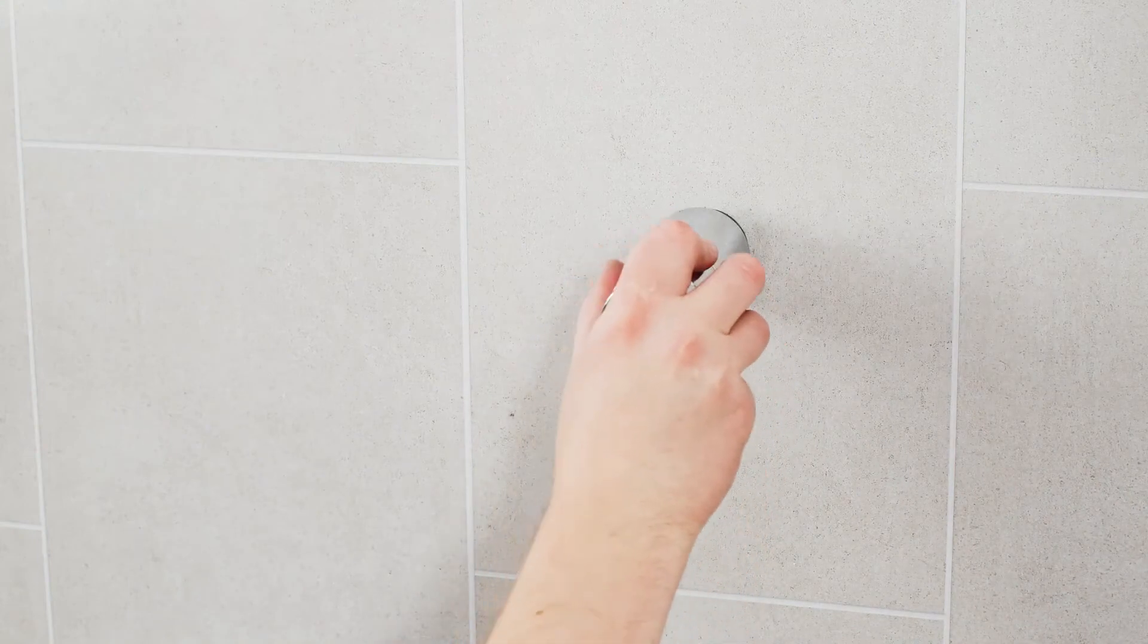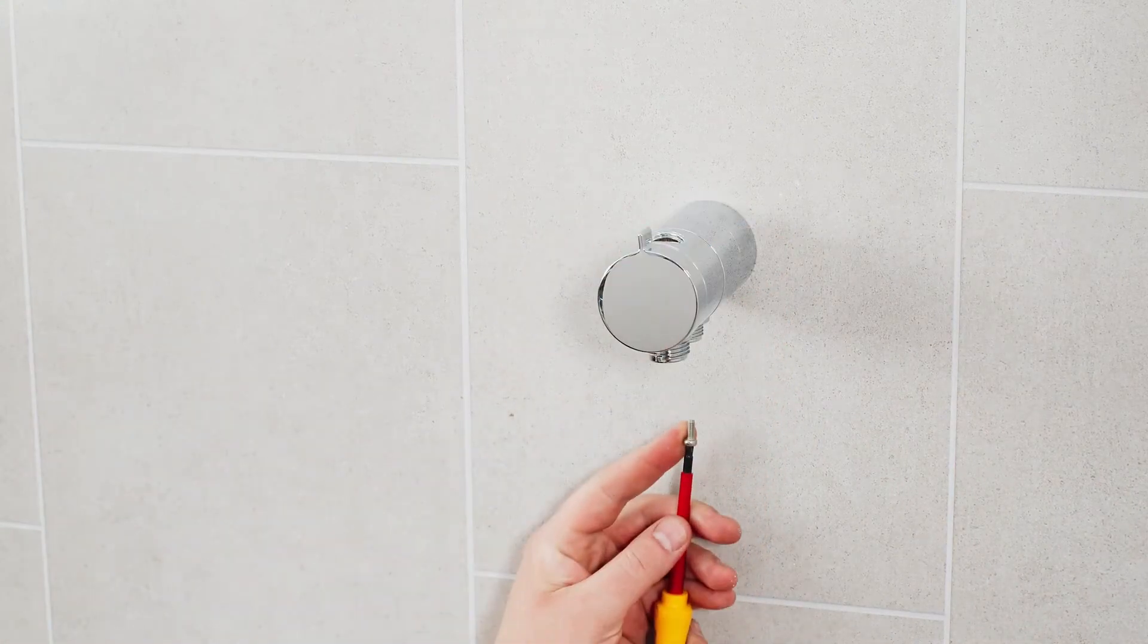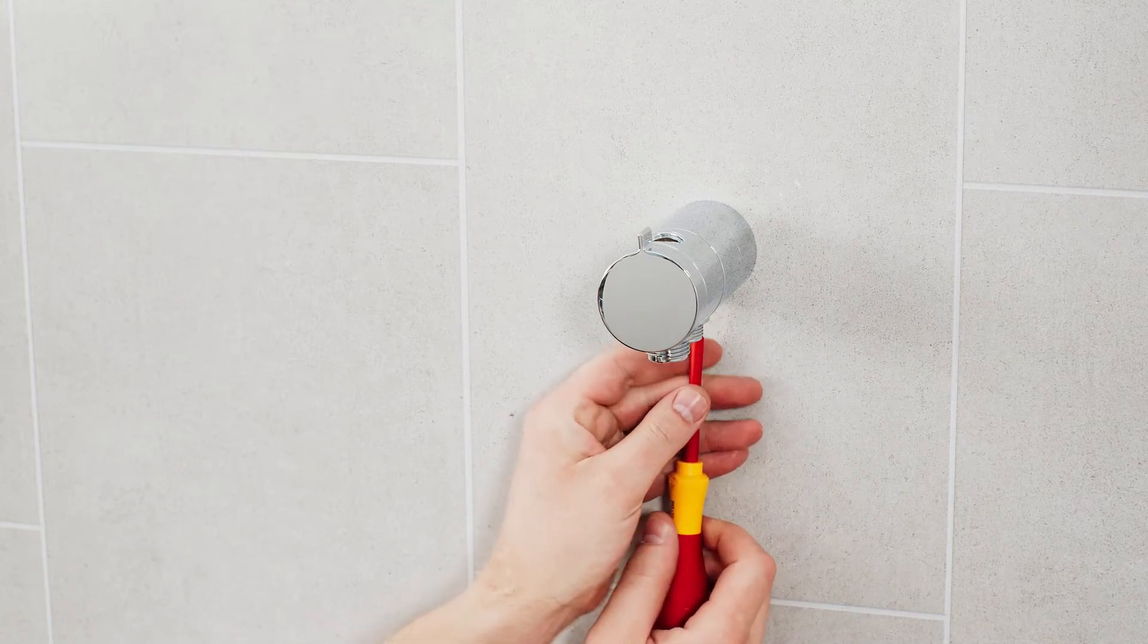The diverter assembly is held into place using a grub screw which is concealed on the underside of the diverter.